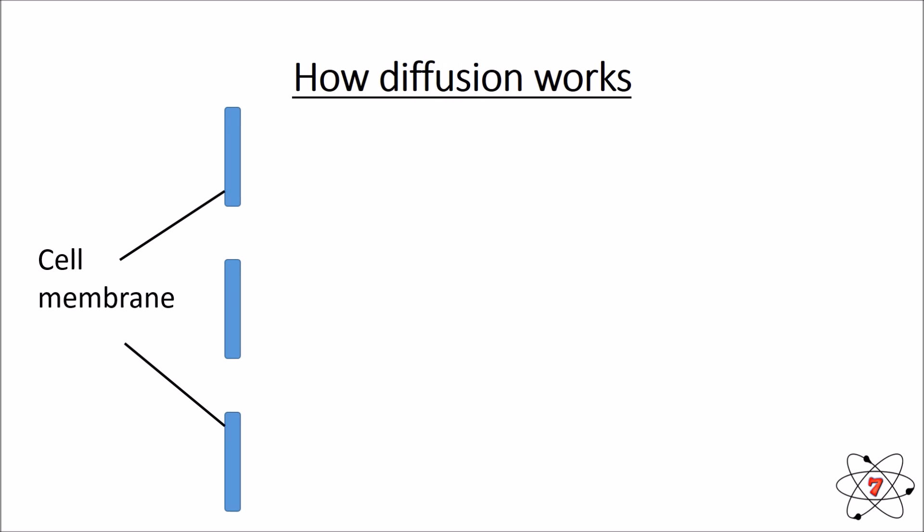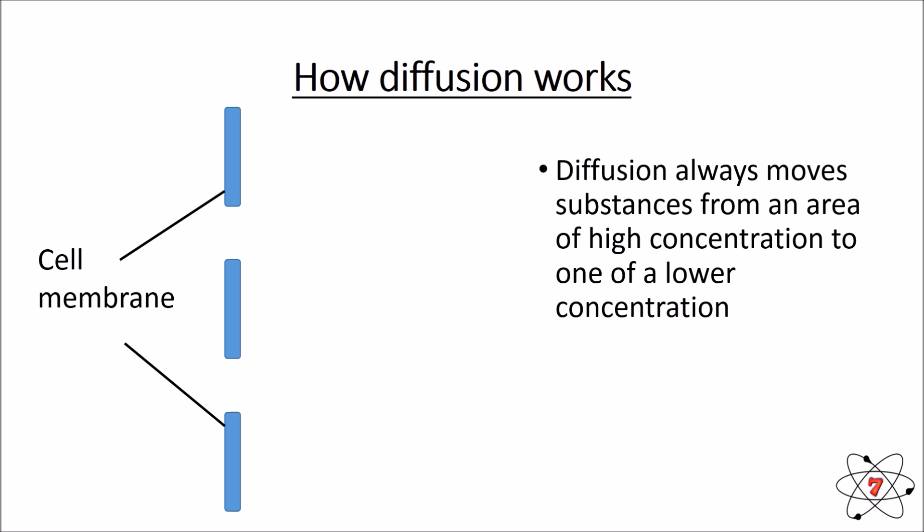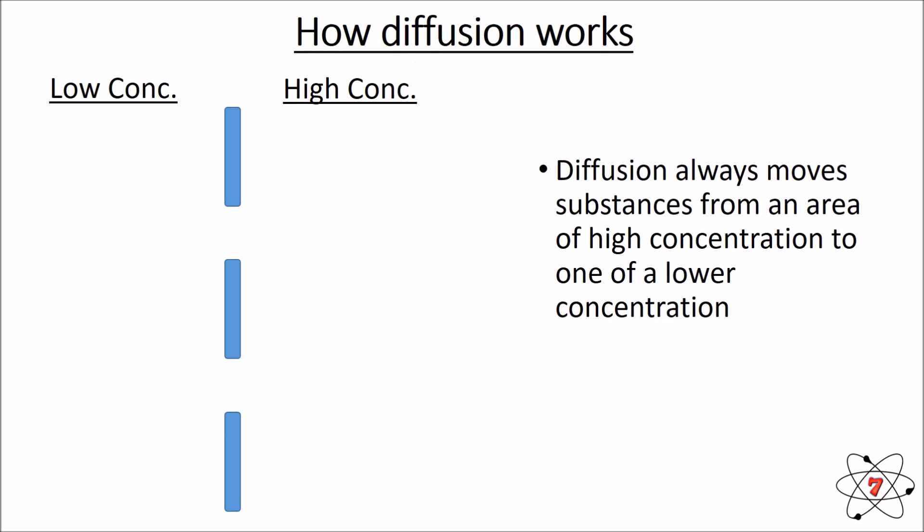How does diffusion work? We have our cell membrane, and as we already know there are tiny tiny holes in that membrane — things that are small enough can pass through. In diffusion, substances always move from an area of high concentration to an area of lower concentration. They never move from an area of low concentration to an area of high concentration. On the left side of the membrane there aren't many particles — low concentration. On the right side there are lots and lots of particles — high concentration.